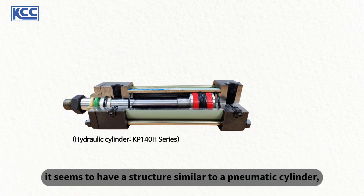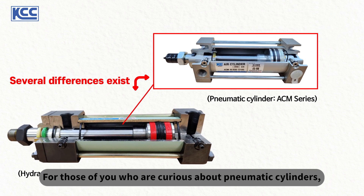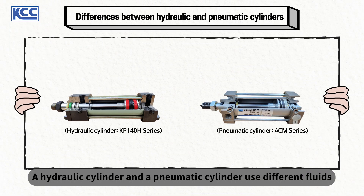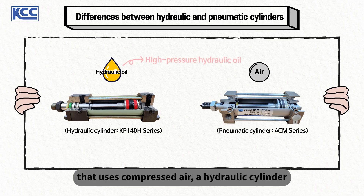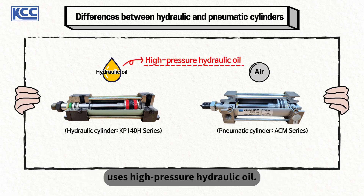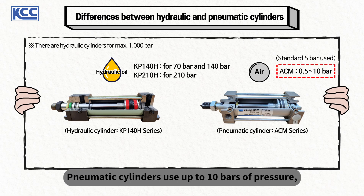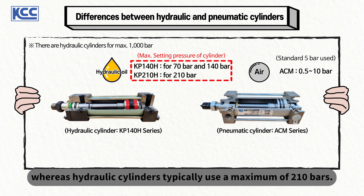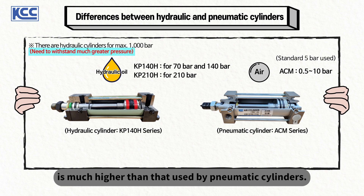Looking at a hydraulic cylinder, it seems to have a structure similar to a pneumatic cylinder, but these two types of cylinders have several differences. For those curious about pneumatic cylinders, please refer to our previous video. A hydraulic cylinder and a pneumatic cylinder use different fluids, so they are manufactured to suit their respective fluids. Unlike a pneumatic cylinder that uses compressed air, a hydraulic cylinder uses high-pressure hydraulic oil. Thus, these two cylinders have different ranges of pressures used. Pneumatic cylinders use up to 10 bars of pressure, whereas hydraulic cylinders typically use a maximum of 210 bars. In other words, the pressure used by hydraulic cylinders is much higher than that used by pneumatic cylinders.